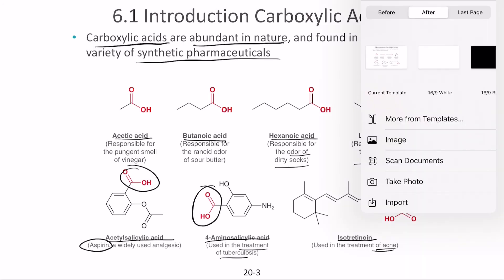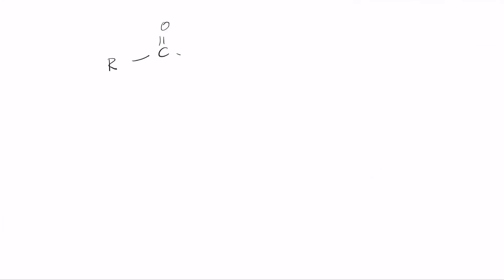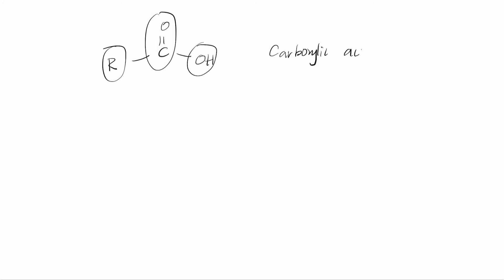A carboxylic group is any side chain attached with a double-bonded carbon and an OH group. You have a carbonyl side, on one side you have an alkyl compound, and on the other side we have an OH group. This group is called a carboxylic acid.